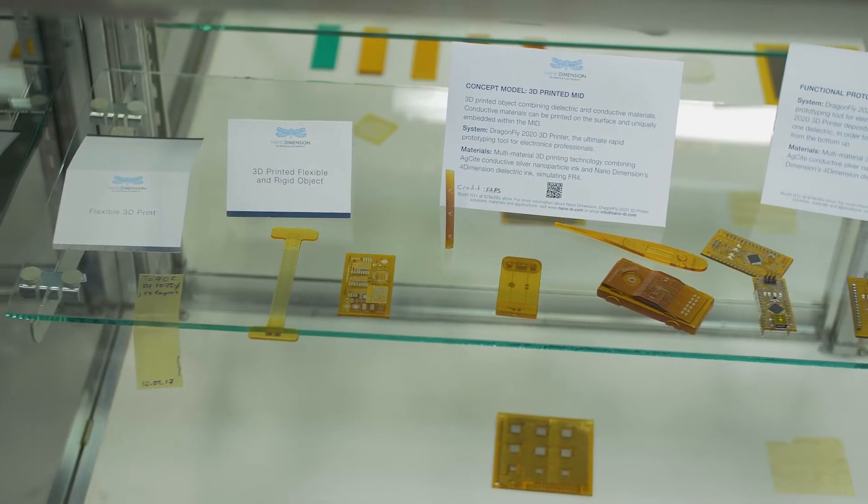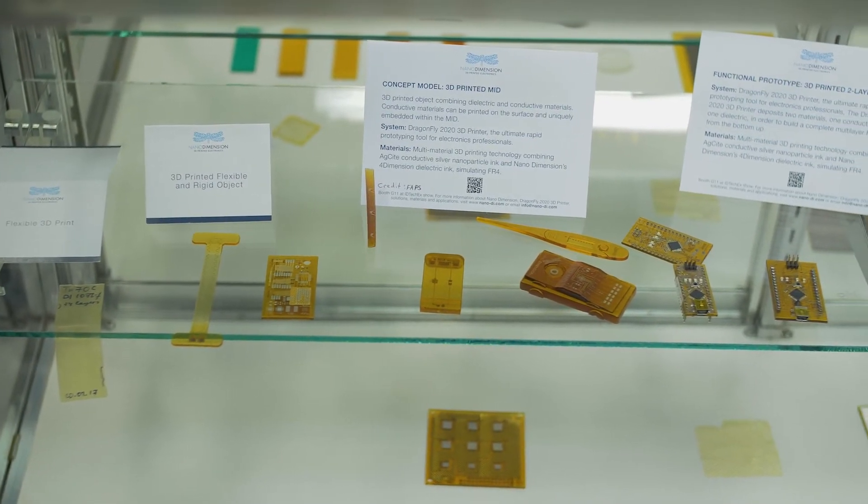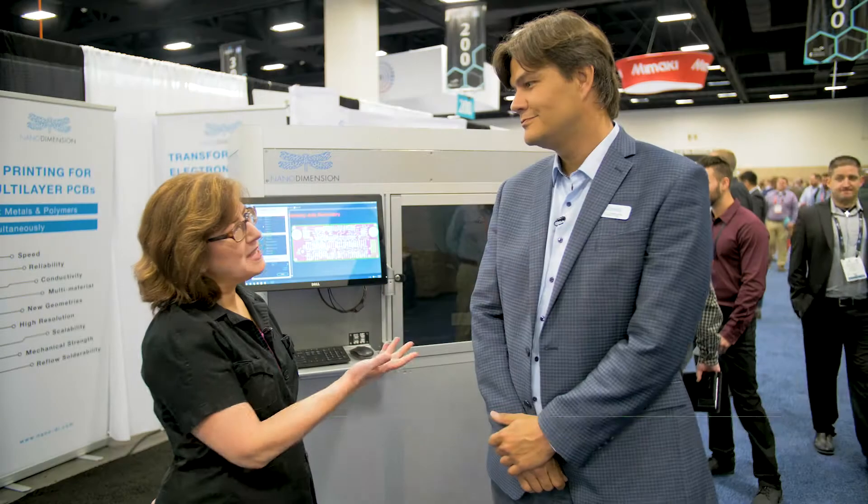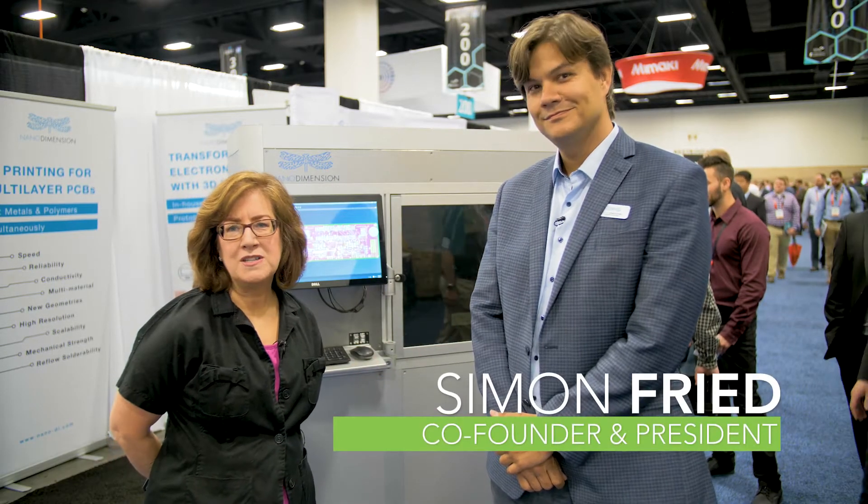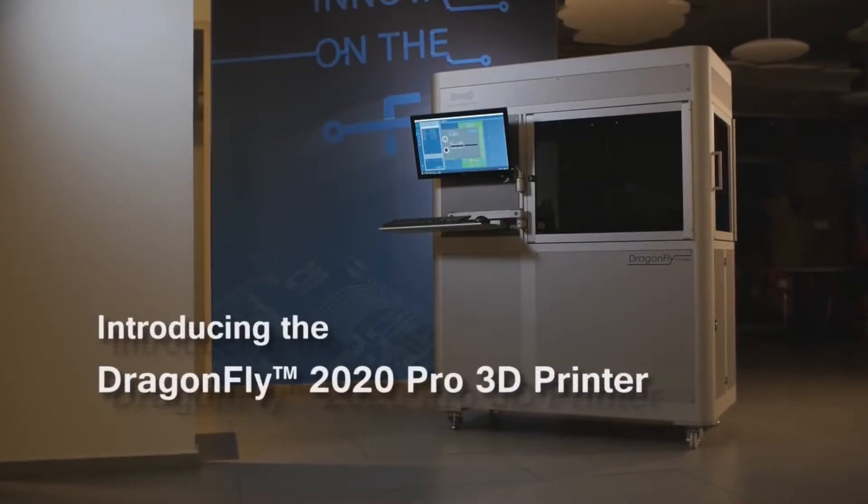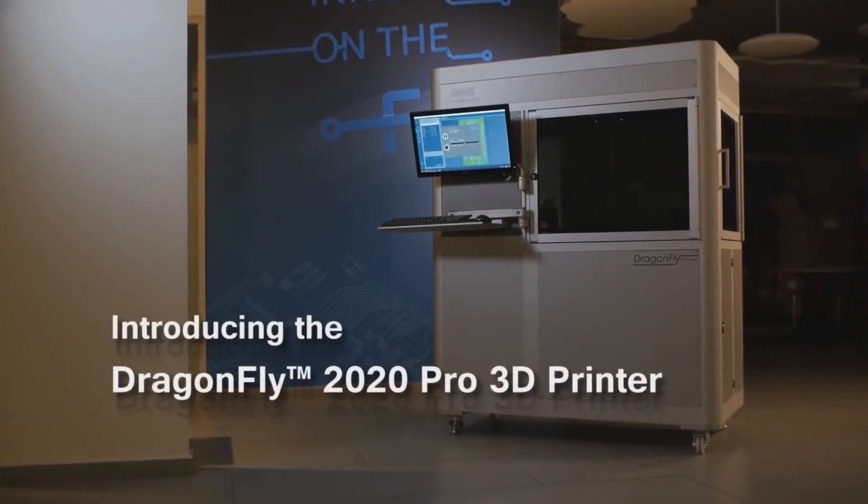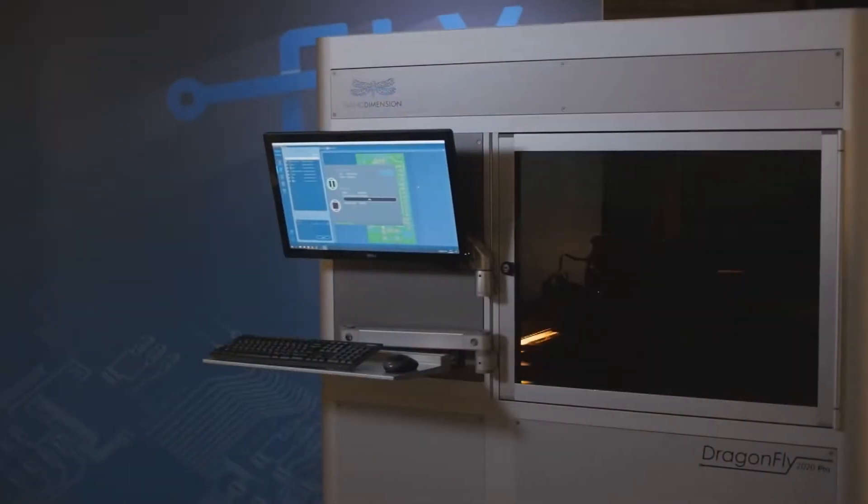Hi, I'm Leslie Langnaugh with Make Parts Fast, and I'm here at the Rapid plus TCT show in Fort Worth, Texas. This is one of the premier additive manufacturing shows, and I'm here with Simon Free of NanoDimensions. Now NanoDimensions is one of the few companies that actually is able to print electronics onto a substrate for printed circuit boards, correct?